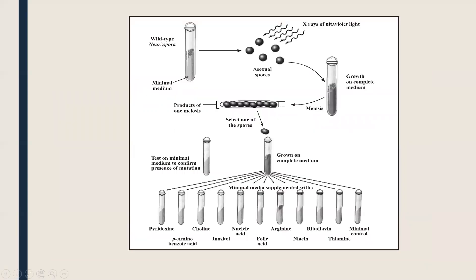You can see that wild-type Neurospora is growing. It is exposed to X-rays and then cultured in minimal media and complete media. It grows in complete media, producing spores. These spores are then tested in different tubes. When pyridoxin is added it grows, meaning the X-ray had damaged the information for pyridoxin synthesis.